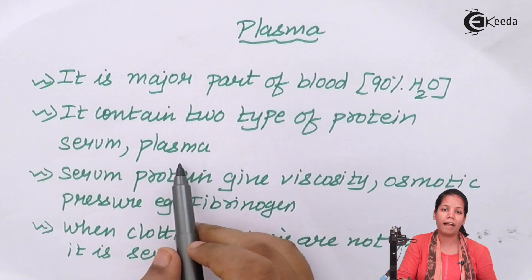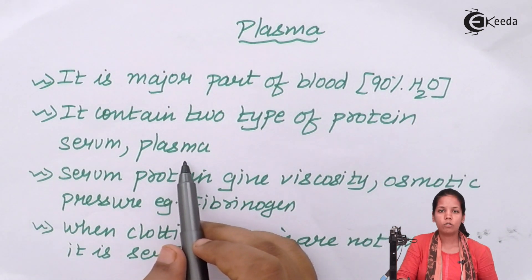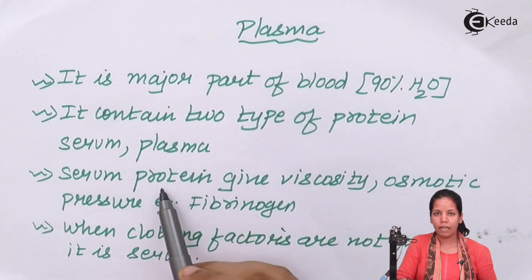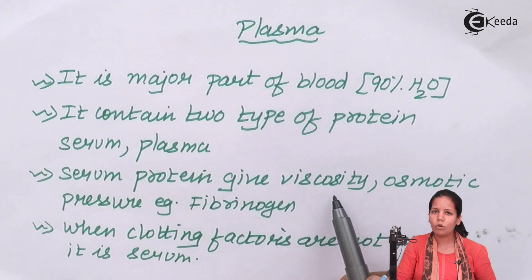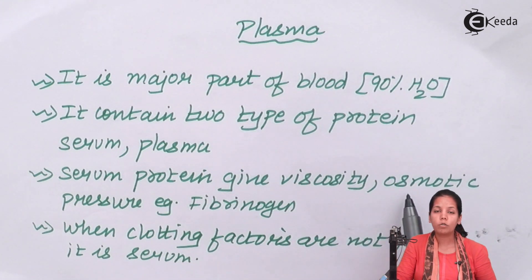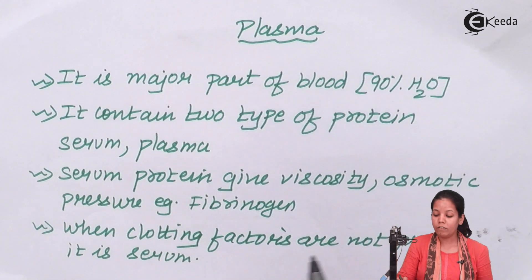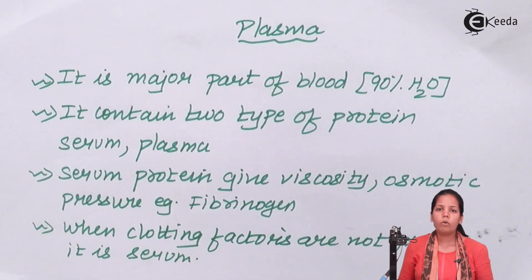Whenever blood is given for sampling or testing — especially for detection of antibodies or antigens — technicians separate serum and plasma to make tests more accurate. The difference lies in coagulating factors. Serum proteins, such as fibrinogen, provide viscosity and maintain osmotic balance. Whenever clotting factors are absent, it is termed serum; adding or removing clotting factors differentiates plasma from serum.